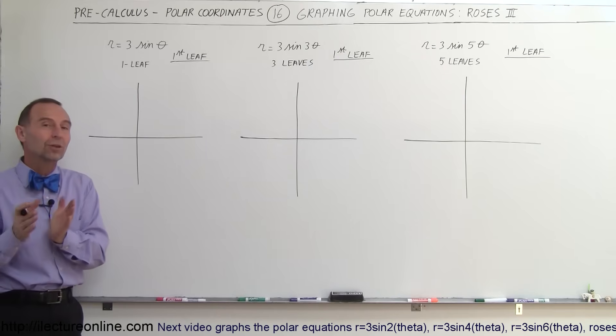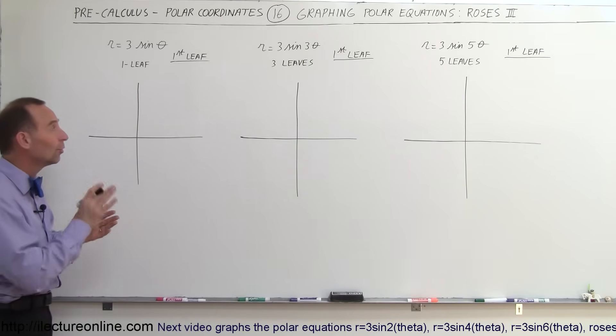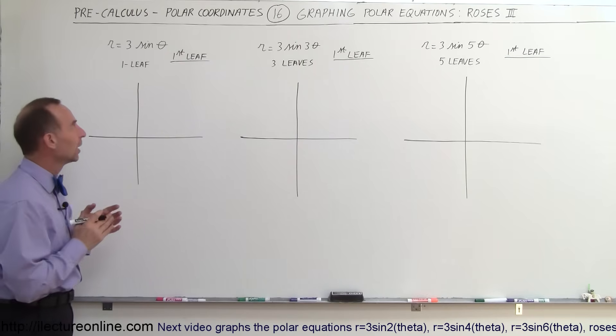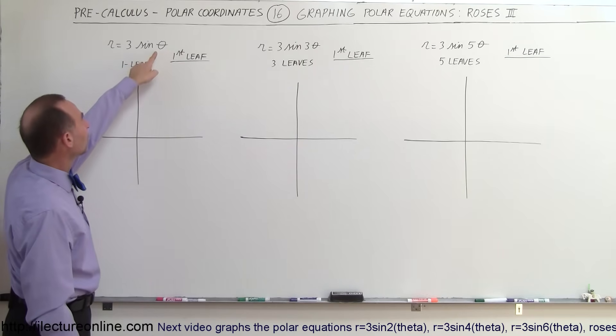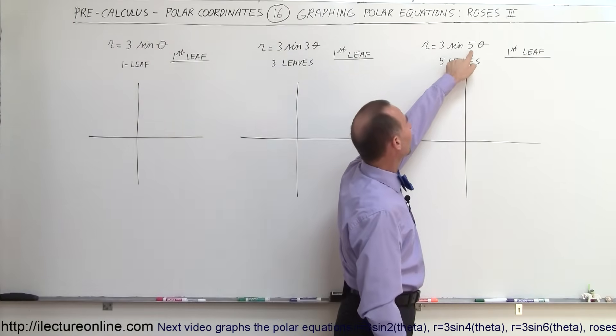Now in the previous two videos, we dealt with the cosine of an angle, both even and odd angles. Here we're going to do the sine. We'll start with the odd angle and then we'll do the even angle after that. With the odd angle, the number of leaves equals the number from the angle. So this would be one leaf, this would be three leaves, and this would be five leaves.